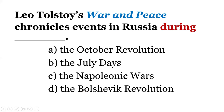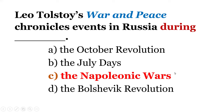Next. Leo Tolstoy's novel War and Peace chronicles events in Russia during: Option A: the October Revolution. B: the July Days. C: the Napoleonic Wars. D: the Bolshevik Revolution. We know Leo Tolstoy's War and Peace is a classic and an epic novel. Answer: C, the Napoleonic Wars.